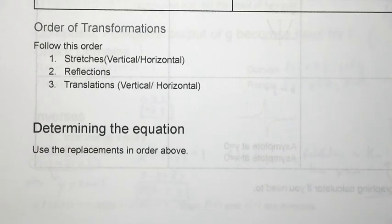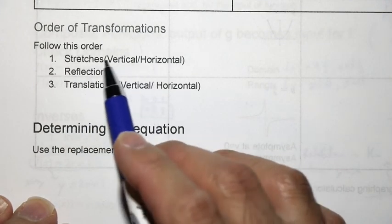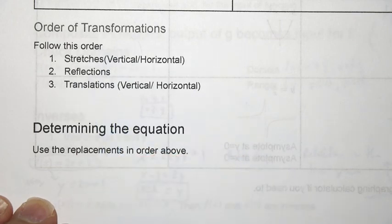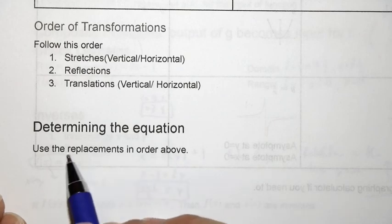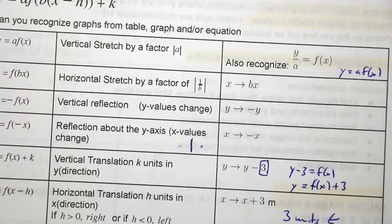If we're talking about the order of transformations, we're going to follow this order. Stretches, vertical and horizontal stretches first. Reflections next. Then followed by translations. If you're going to be determining the equation, then you're going to be using the replacements in the table that you see here.